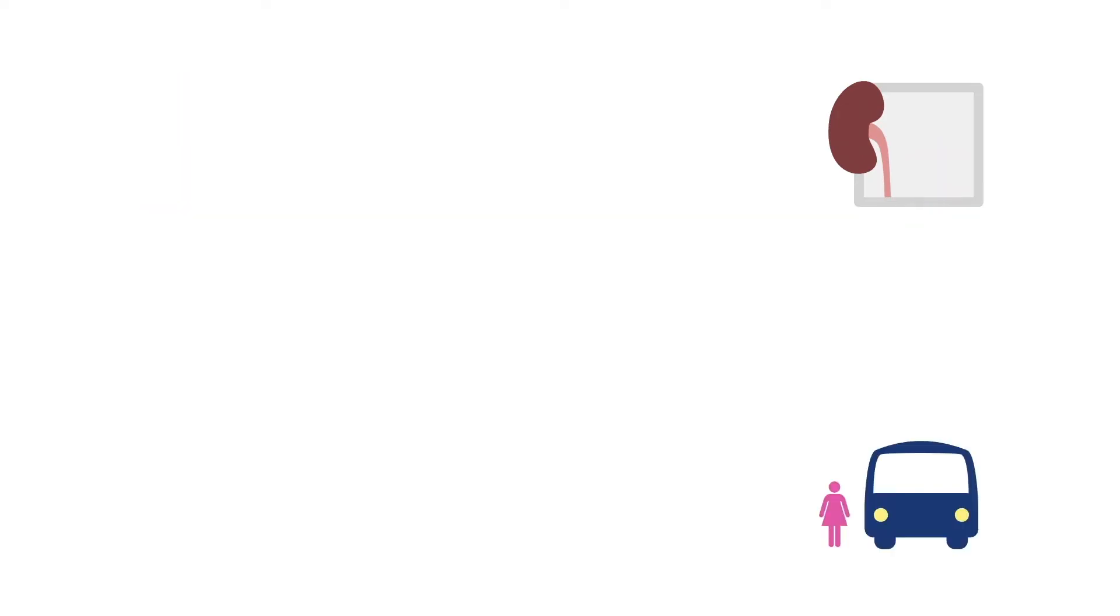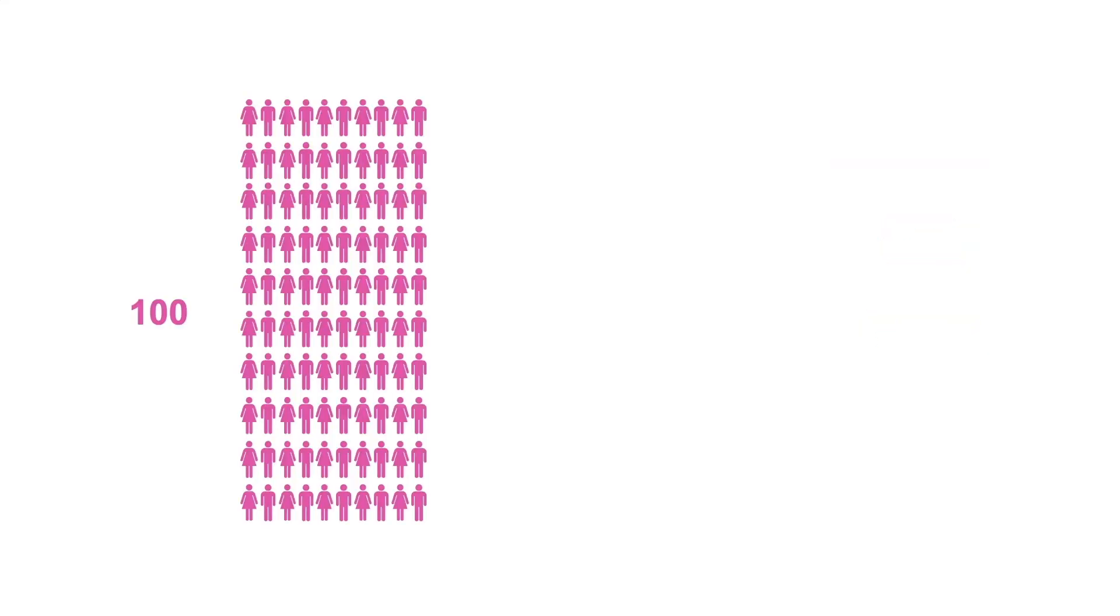Finally, a small number of people don't take the train at all and drive themselves directly to the kidney station. Let's apply some numbers. Say that 100 people are on their way to work. So 90 get on the express train, 8 take the slow train and successfully get on the connecting train at the NAPKE stop, and 2 drive themselves.